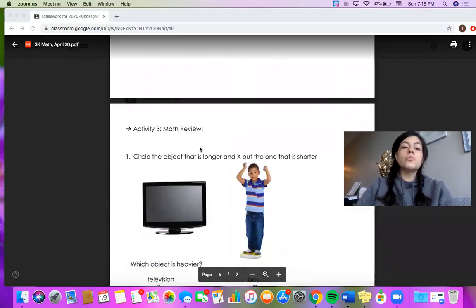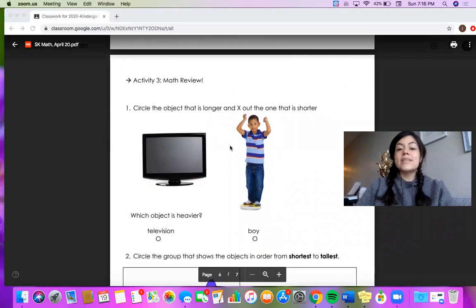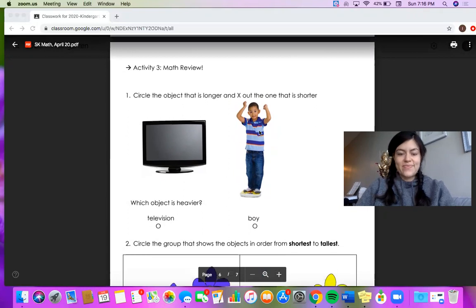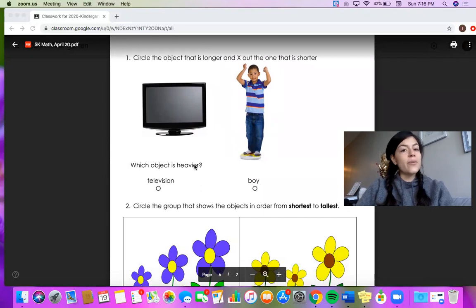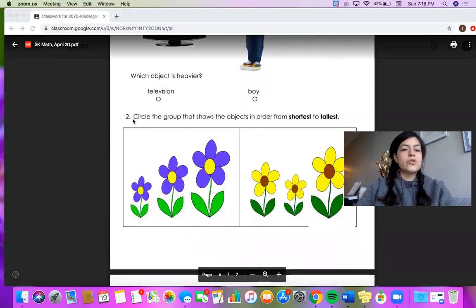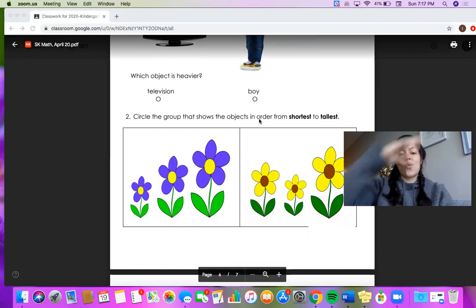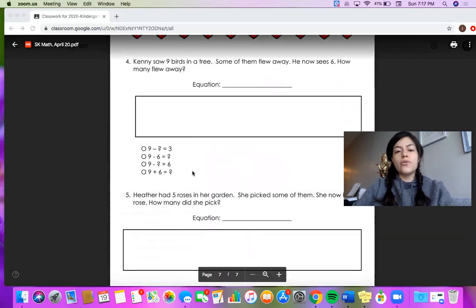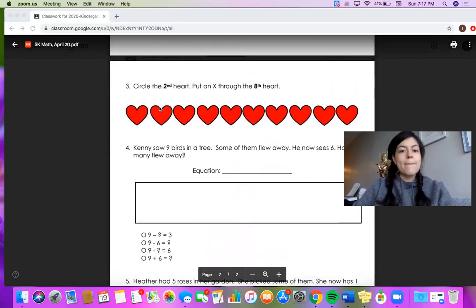When you finish activity two you can move on to your math review. There is a little bit of measurement review here as well. For number one you will circle the object that is longer and cross out the one that is shorter. Then you have to answer which object is heavier, the television or the boy. For number two, circle the group that shows the objects in order from shortest to tallest. So that needs to be an increasing order.